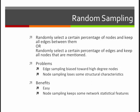Node sampling, on the other hand, loses some structural characteristics. If we're randomly choosing nodes, we may actually miss out on some of the really important nodes in the network. We're also going to be missing some of the edges that come from those nodes, and so it's just not going to look the way that the network does as a whole. Again, benefits. This is something that's easy to do, and node sampling keeps some network statistical features. So you can run some network statistics if you have sampled by nodes, and then you'll have some results that you can work with statistically.